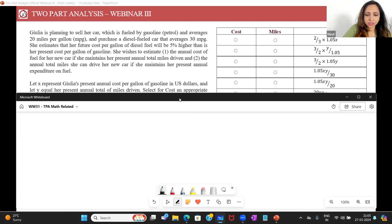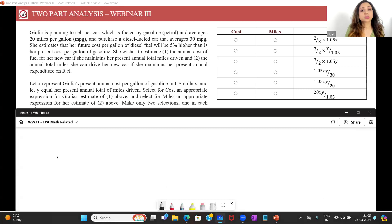Let's look at it. Julia is planning to sell her car which is fueled by gasoline petrol and averages 20 miles per gallon. Okay, so let's say petrol averages 20 miles per gallon, so I would say that this is the mileage, and this is 20 miles per gallon.